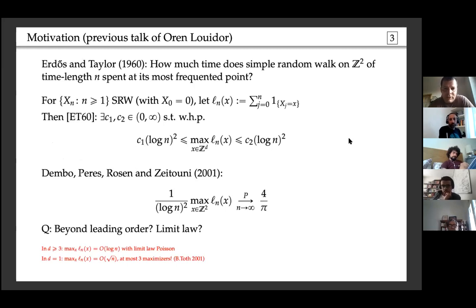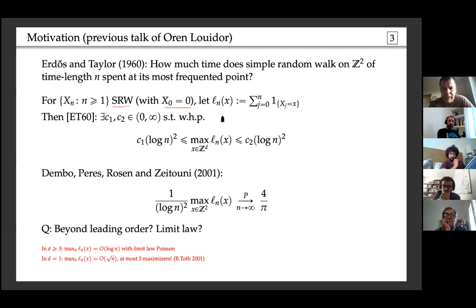Here's more motivation. The starting point for looking at exceptional points of simple random walk goes back to Erdős and Taylor in 1960, where they asked: how much time does the simple random walk spend in its most frequently visited point? For a discrete-time random walk on Z² started at zero, define the local time as the number of times the walk visits x in the first n steps. They proved that in two dimensions the maximum value is squeezed between two constant times (log n)².